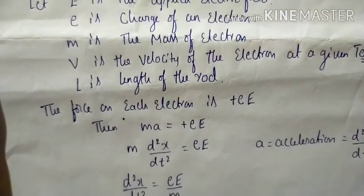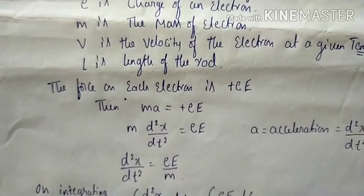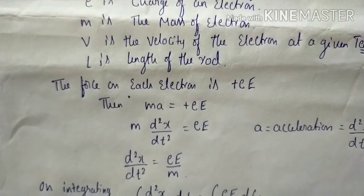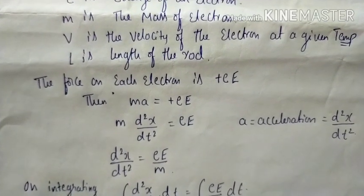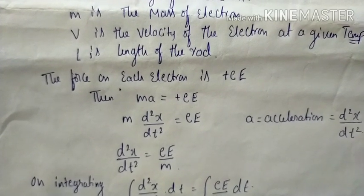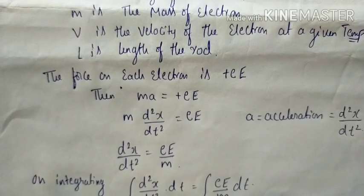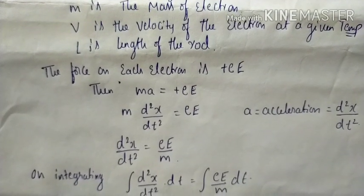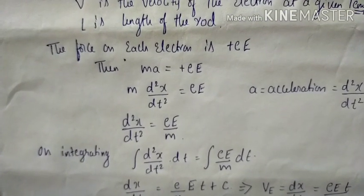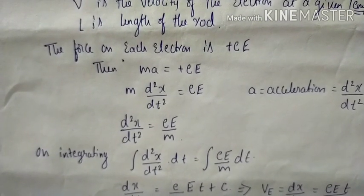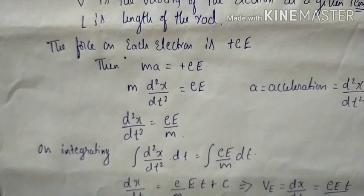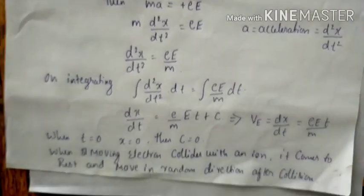According to Newton's second law, F = ma, so ma = eE. The acceleration a is taken as d²x/dt², so the force becomes m(d²x/dt²) = eE. Therefore, d²x/dt² = eE/m. We now proceed to integration.